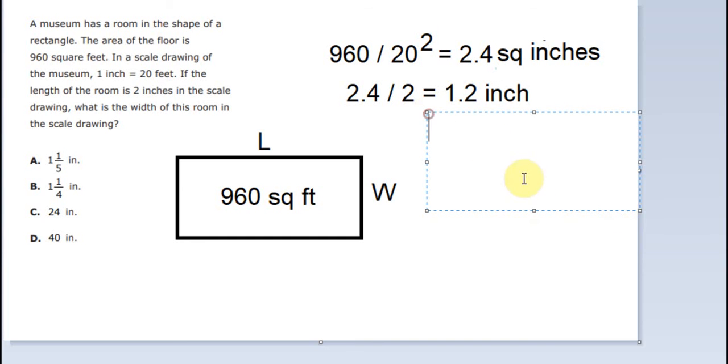In this situation, 1.2 is about 6 over 5. And 6 over 5 is 1 and 1 over 5, because 5 multiplied by 1 plus 1 equals 6. That's why you got 1 and 1 over 5. And the answer for the question is B.